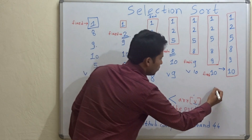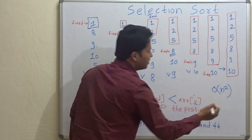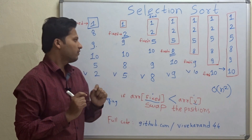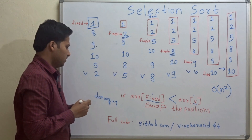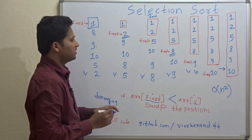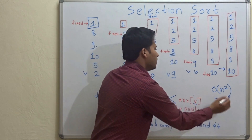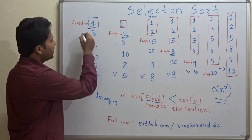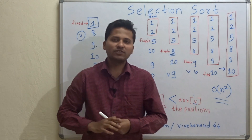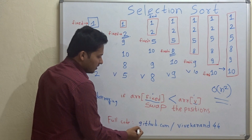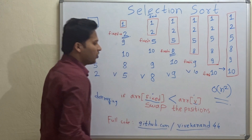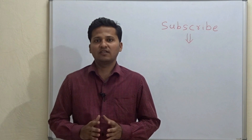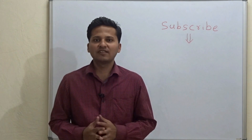The time complexity of the code is O(N²) because we need two loops — the outer loop for the fixed pointer and the inner loop for the variable pointer. The full code is available at github.com/vivekanan44. Please subscribe to my channel as I post algorithm videos every day, and if you want a video on any particular topic, please mention it in the comments below. Thank you.